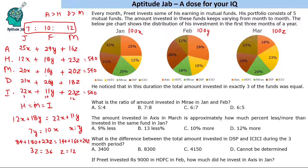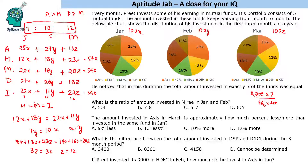Now let us answer the questions. What is the ratio of amount invested in Mirai in January and February? Mirai in January = 20 × 7 = 140, and in February = 16 × 10 = 160. So the ratio is 140 : 160 = 7 : 8.